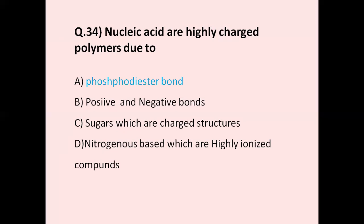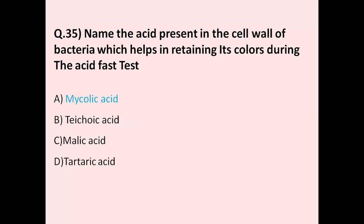Question number 34: Nucleic acids are highly charged polymers due to — option A phosphodiester bond, option B positive and negative bonds, option C sugars which are charged structures, option D nitrogenous bases which are highly ionized. The correct answer is phosphodiester bond. Phosphodiester bonds are responsible for the negative charge on the DNA molecule. Nucleic acids are made up of nucleotides linked by phosphodiester bonds to form unbranched polymers.